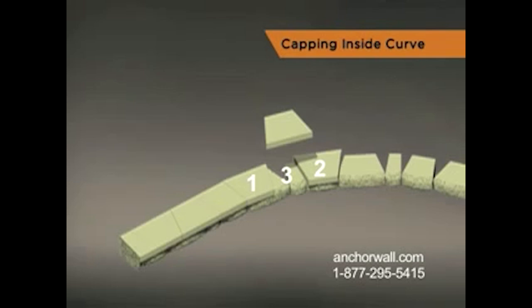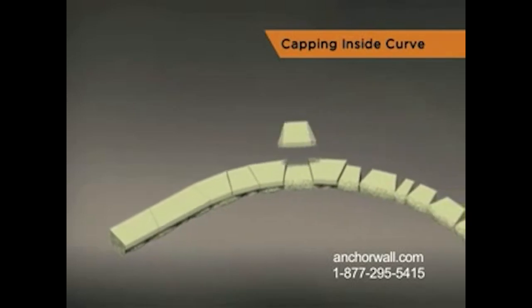Bridge the gap with a third cap. Align this cap as you wish, mark or scratch the underside of the cap, and make the appropriate cuts. Continue capping the wall in this sequence.